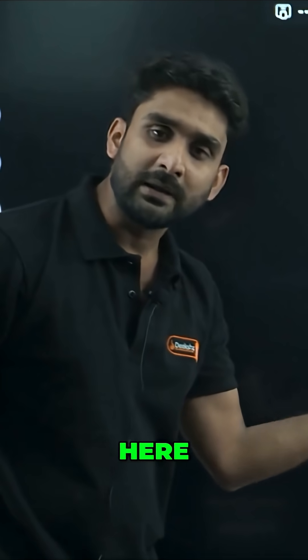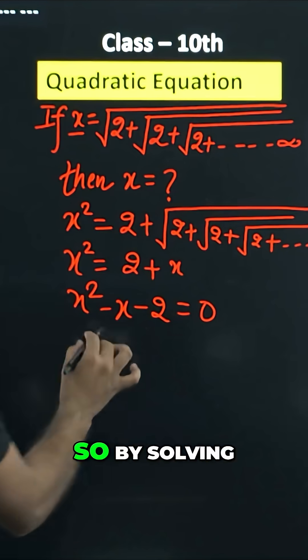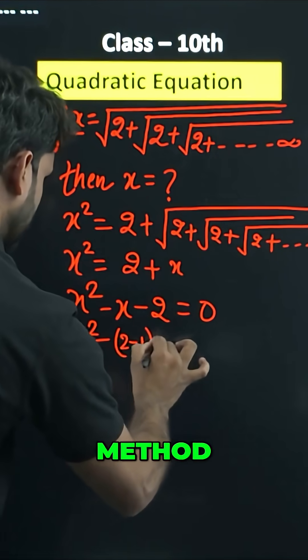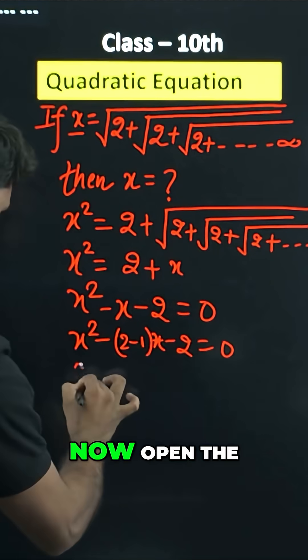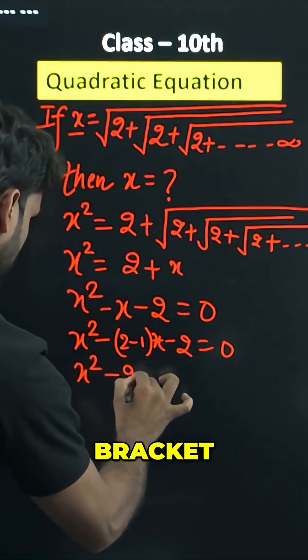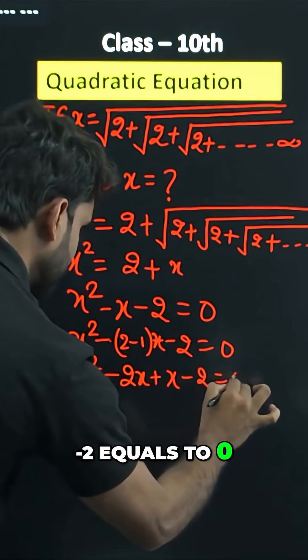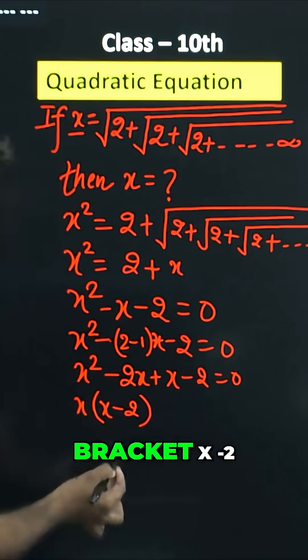By solving this by middle term splitting method: x square minus 2x plus x minus 2 equals to 0. On taking common x minus 2, we are getting bracket x minus 2.